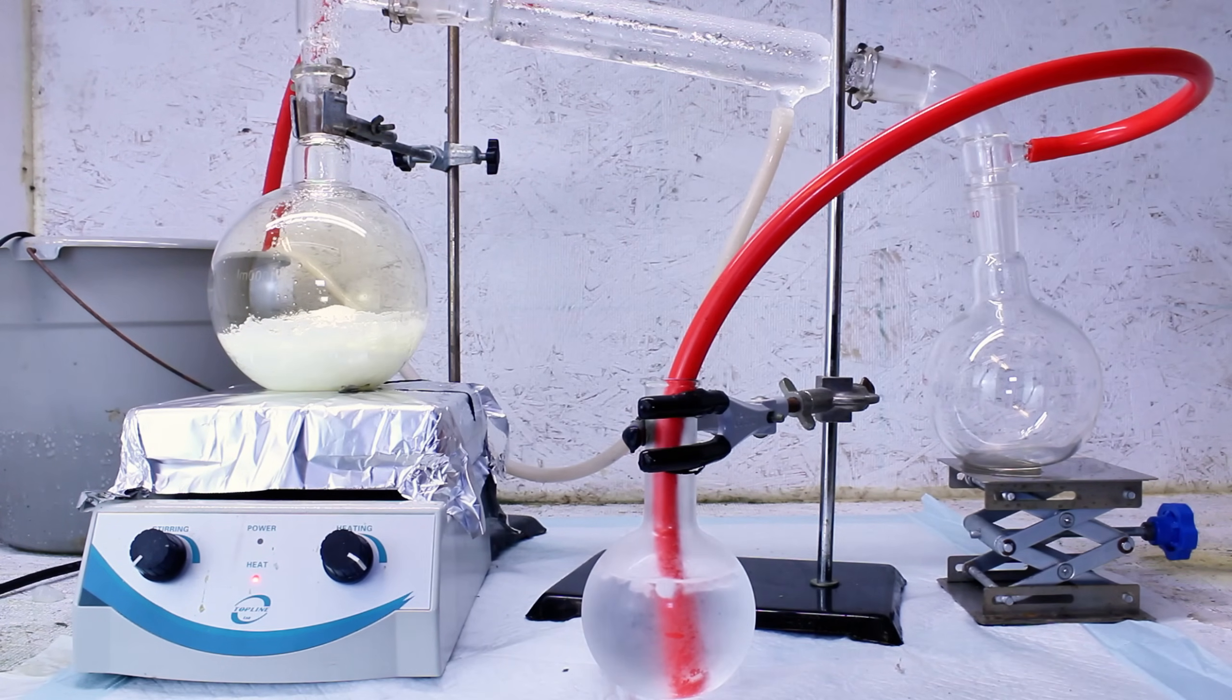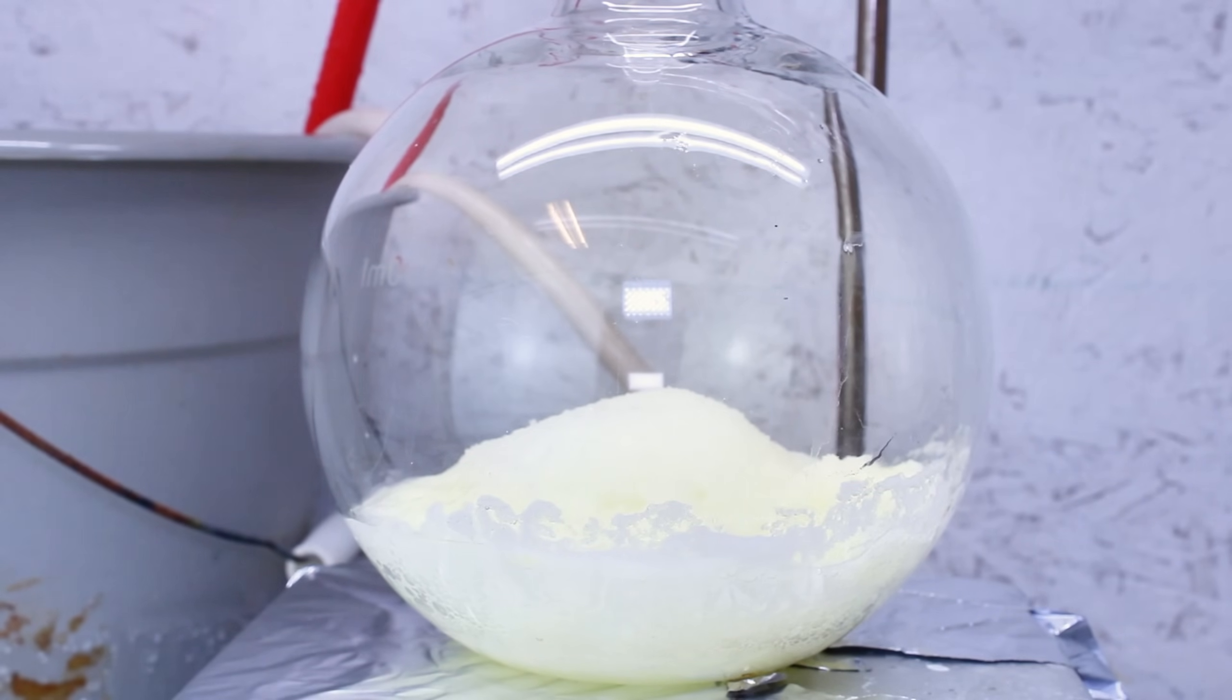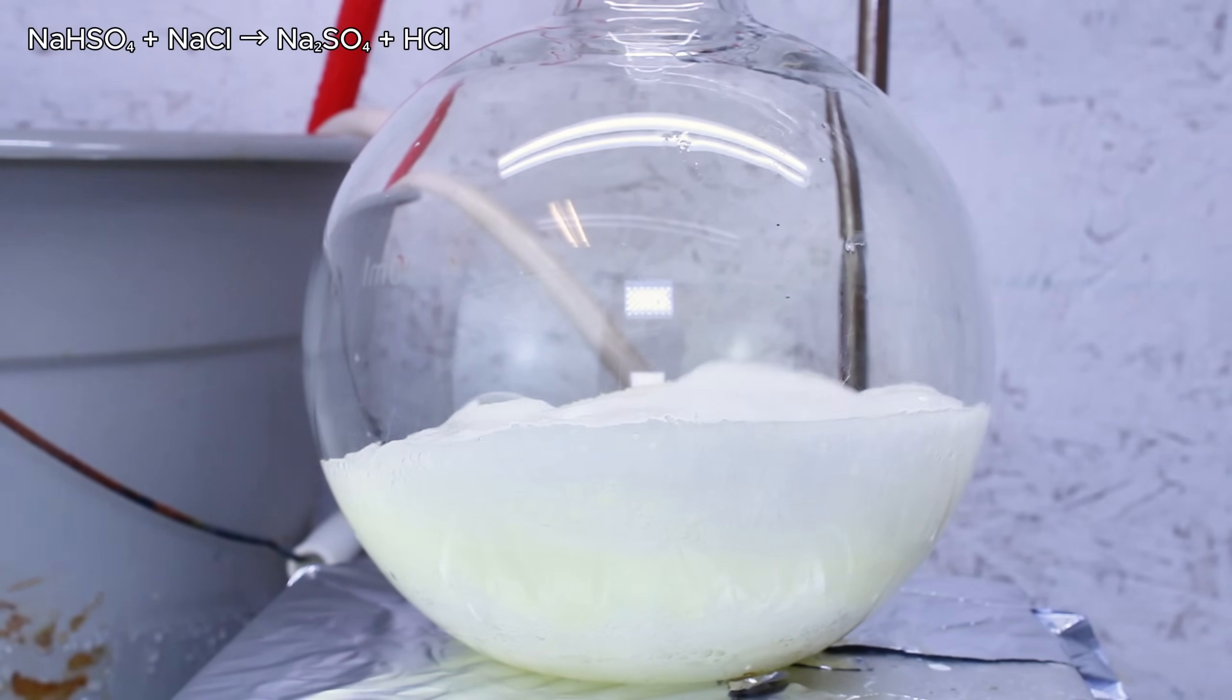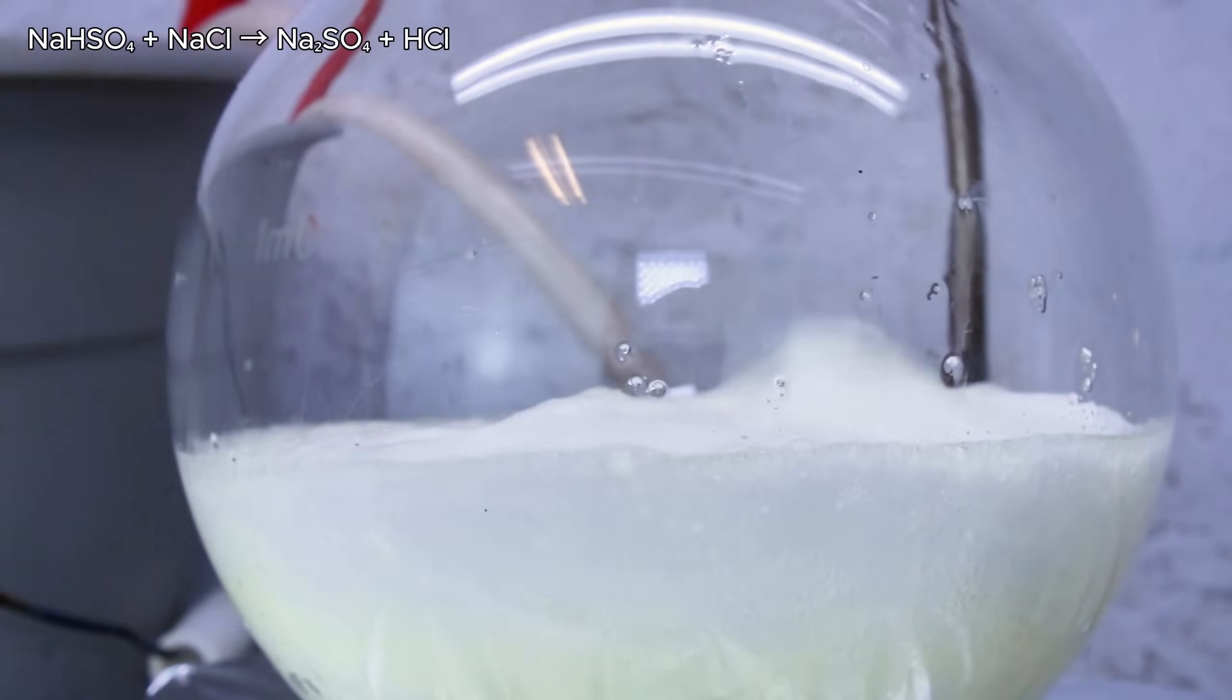With that said, making hydrochloric acid is essentially a process of first making hydrogen chloride gas, and then dissolving that gas in water. Now, I personally never really make hydrochloric acid, as it's very cheap to buy where I live. But when I do make it, I'll almost always do it by reacting sodium bisulfate with sodium chloride. And as it just so happens, I have a good bit of sodium bisulfate on hand. How convenient.